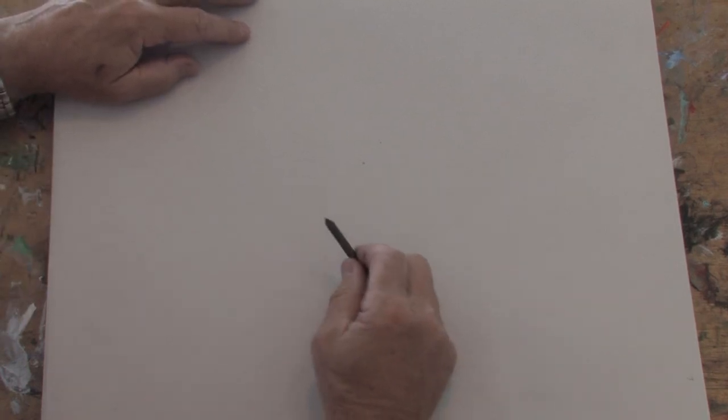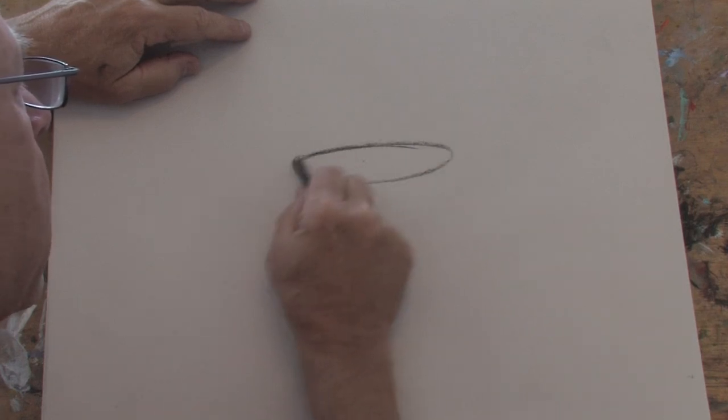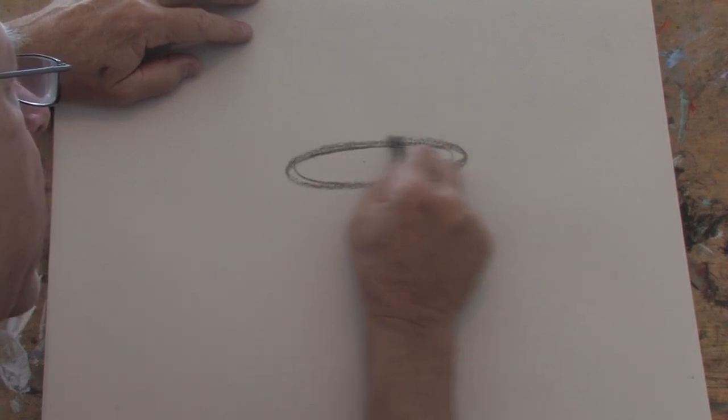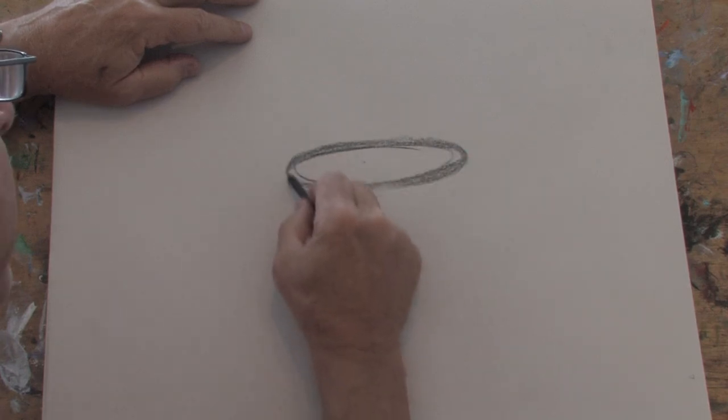We're going to start off where we're looking down at a pot, and it's usually easy to draw this nice ellipse. I'm just going to make a couple of strokes around until I get a shape that I want. That's about the angle that I'm looking down at the surface.